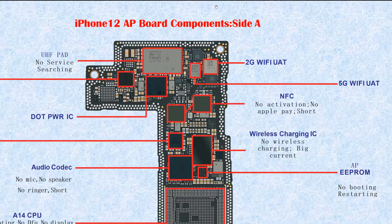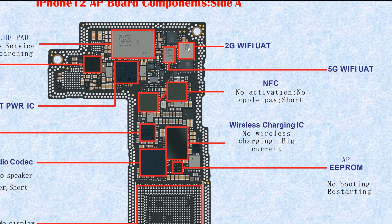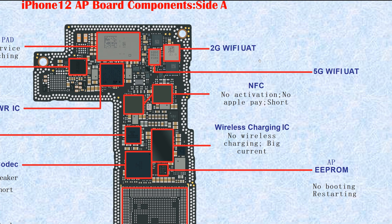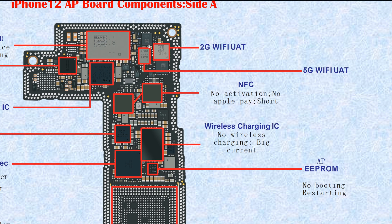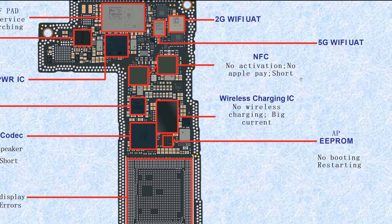AP board, Side A. From here, this one is the 2G WiFi UAT — UAT means Up Antenna. This is the 2G WiFi up antenna. This one is the 5G WiFi up antenna. If these are broken, it causes WiFi abnormal.